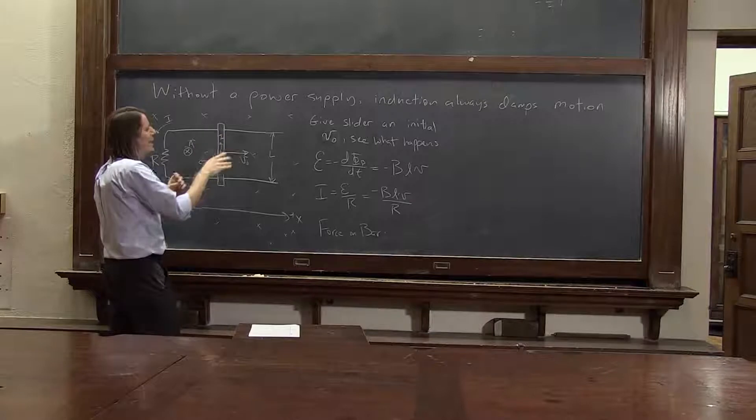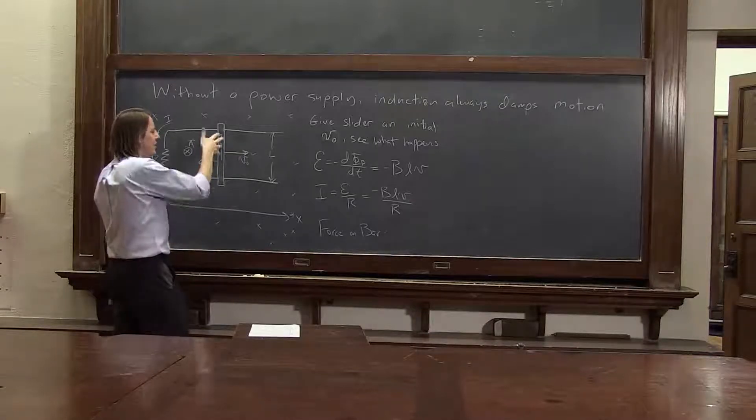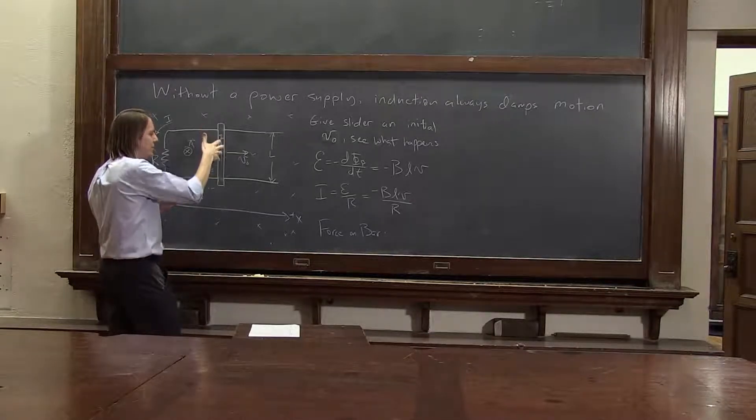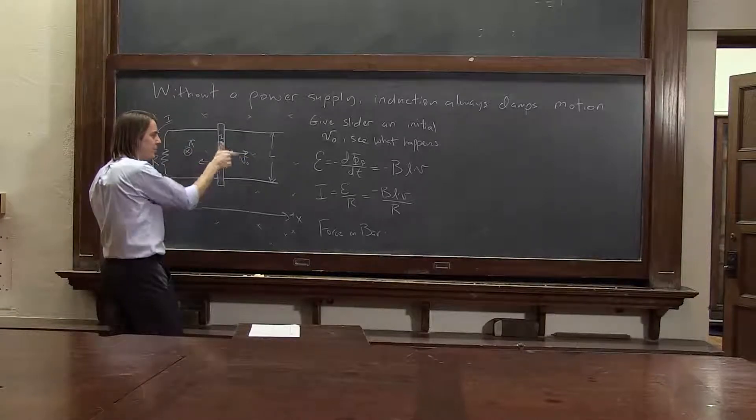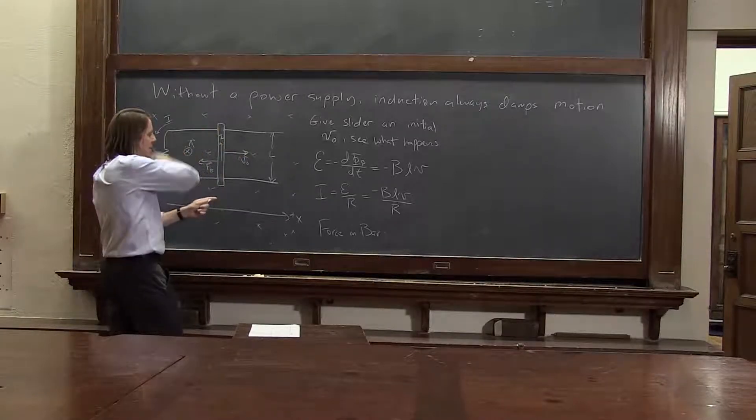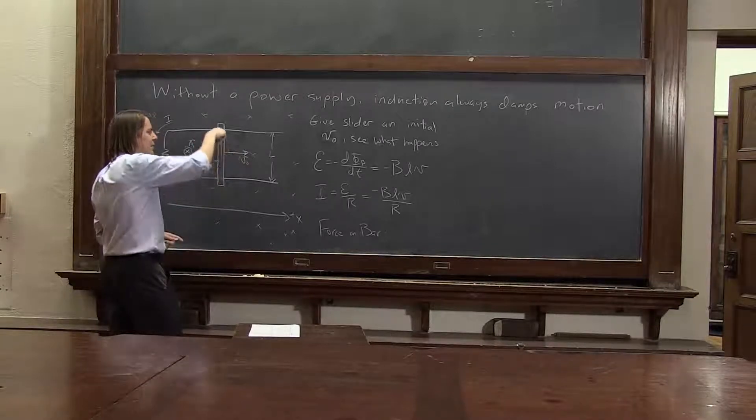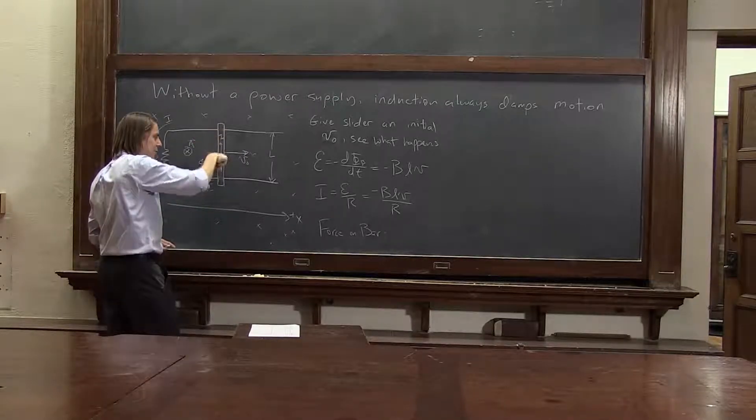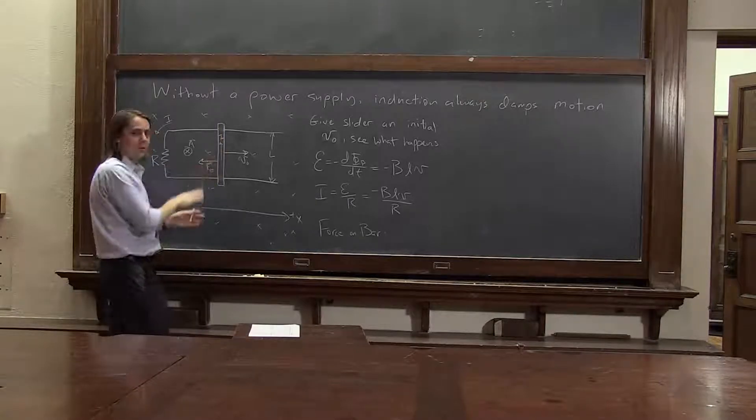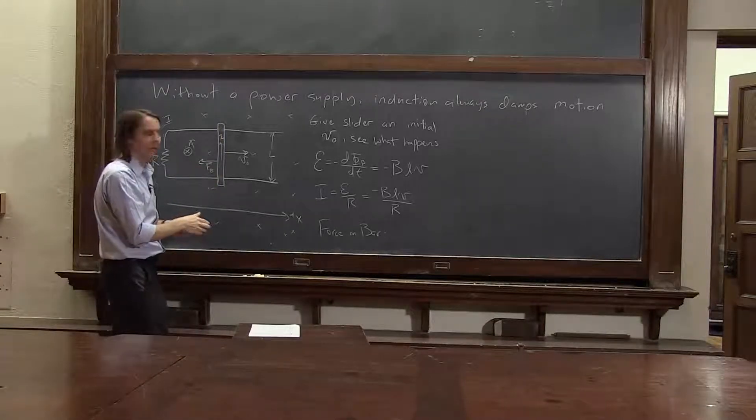So when we thought about the induction, we said the charges, the free charges in the metal, are moving this way. And we said that v cross b caused the polarization, which ends up causing induction. Now we have something different. Not a velocity this way. We have a velocity of charge carriers if they're electrons this way and if they're positive that way. So it's actually at 90 degrees to that other velocity we thought about.